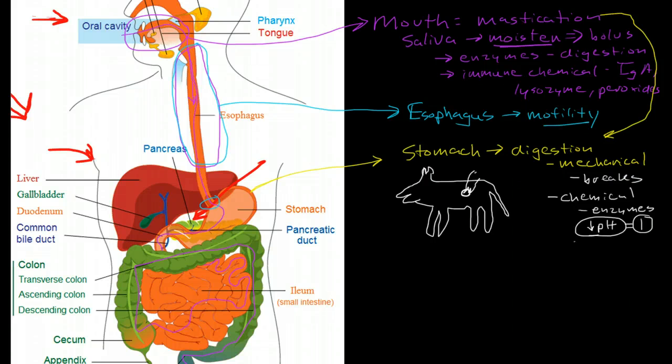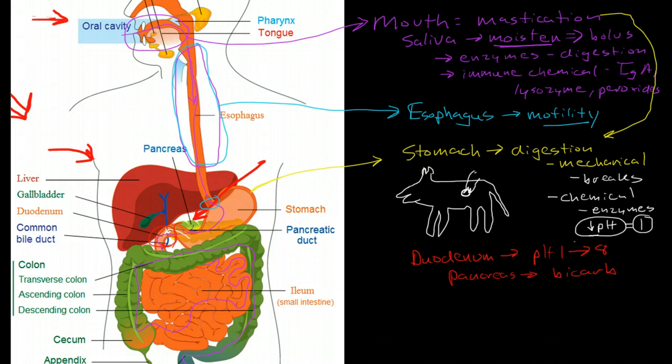Then as we pass through into the duodenum, we start to see the role of the pancreas because as you can see the pancreas here drains into the duodenum. And one of the first things that you need to recognize in the duodenum is we have the pH that goes from 1 up to near 8 and it does this because the pancreas is secreting a lot of bicarb, and then also the digestion continues because of pancreatic enzymes.